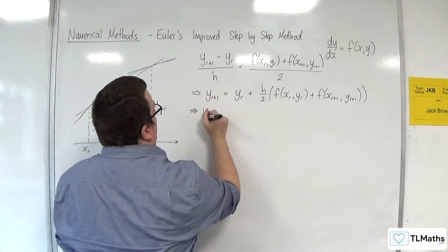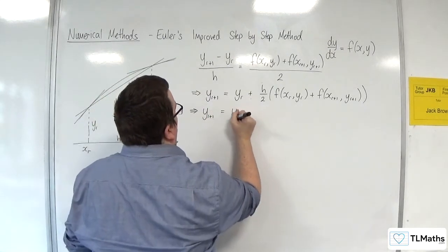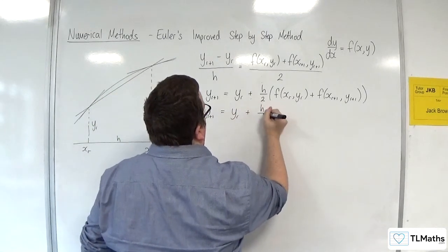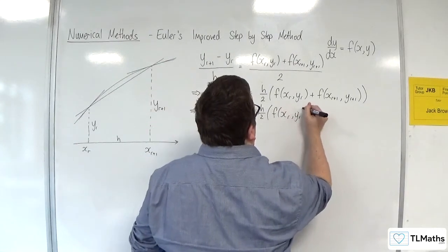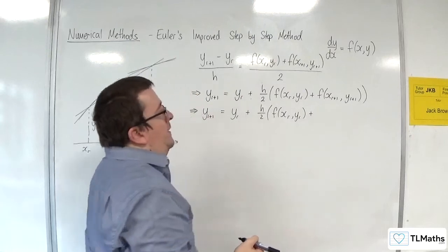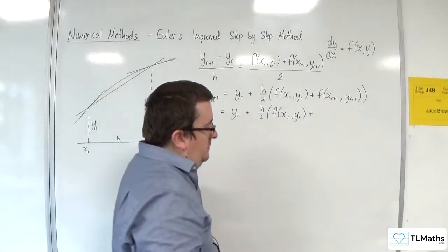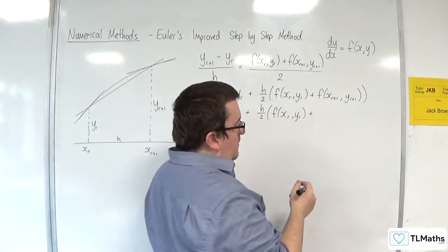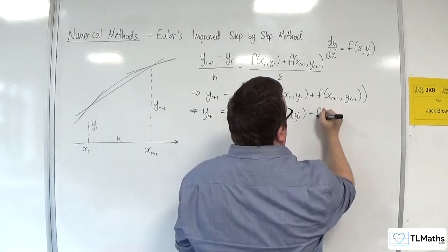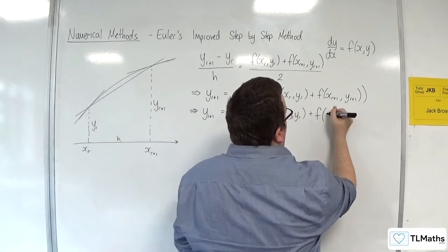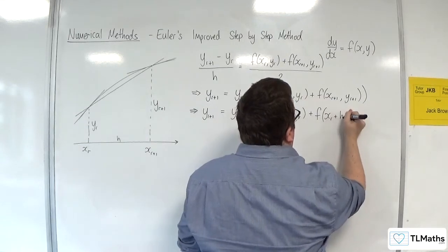So, that would be equal to... So, we'd have YR plus 1 is equal to YR plus H over 2, lots of F of the XR, YR, plus... Now, this bit here, this YR plus 1. Now, the XR plus 1, I know, is just going to be XR plus H, from the previous formulas we've utilised.